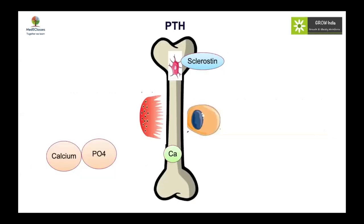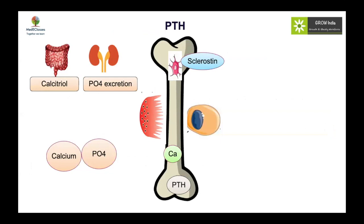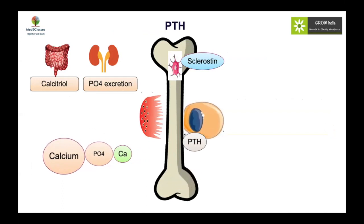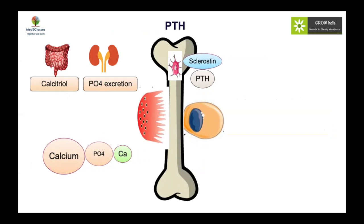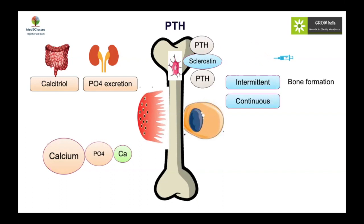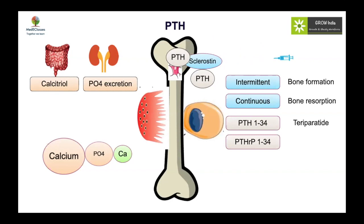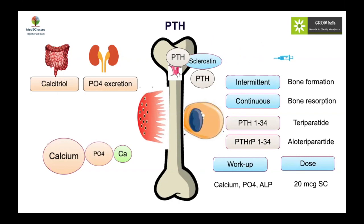Other options not routinely used in children include PTH, which increases phosphorus excretion, increases calcium absorption, and has direct and indirect effects on osteoblasts. It also suppresses sclerostin. Given intermittently, PTH increases bone mass; given continuously, bone mass decreases. Synthetic peptides teriparatide and the native PTH analogue abaloparatide are not yet approved for children due to a theoretical risk of osteosarcoma. If considering PTH, always check calcium, phosphorus, and alkaline phosphatase first. Dose is 20 mcg subcutaneously.